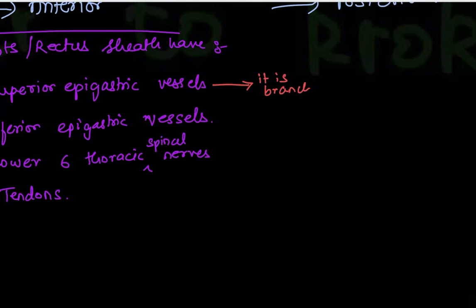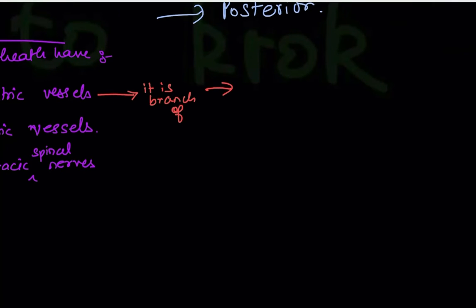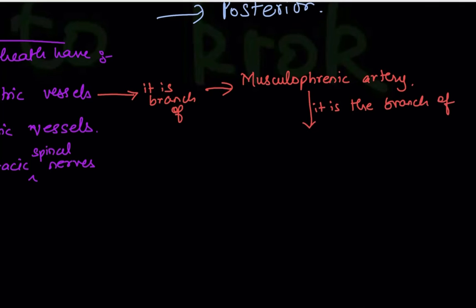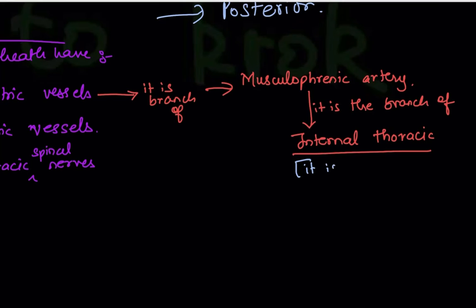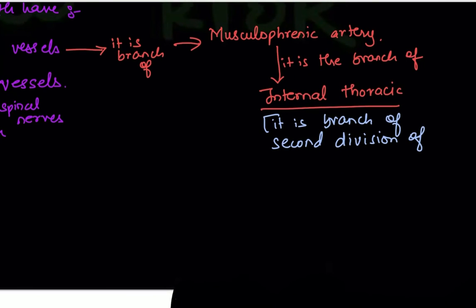The superior epigastric vessel is a branch of the musculophrenic artery. The musculophrenic artery is itself a branch of the internal thoracic artery, which is also called the mammary artery. The internal thoracic artery is a branch of the second division of the subclavian artery — which we covered when studying arteries of the upper limb.